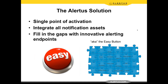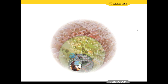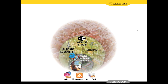To summarize: Alertus provides a single point of activation, controlling all assets — we're the glue that brings all these devices together and provides a consistent, unified message across all your assets. We integrate all your notification assets so you're not individually activating each one, giving a very quick activation timeframe. We also fill in the gaps with innovative alerting endpoints — the Alert Beacon, LED marquees, panic button capabilities — all controlled and activated from a single interface.